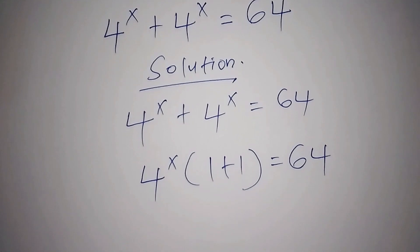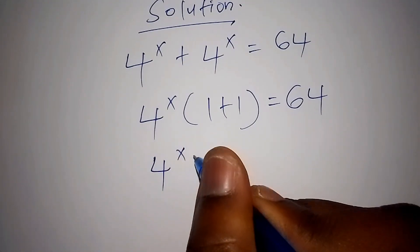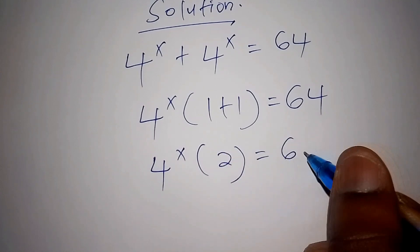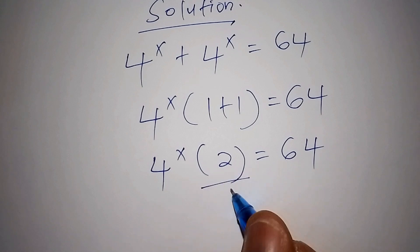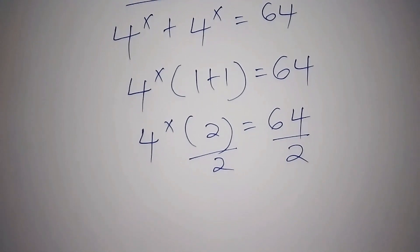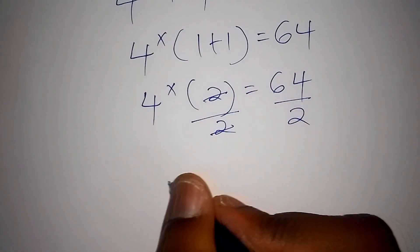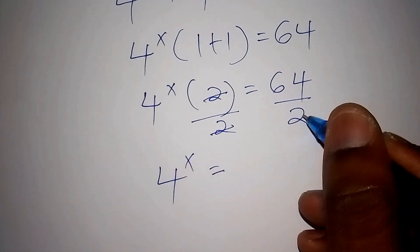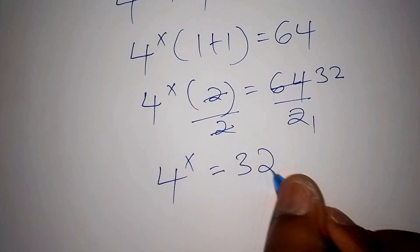Our next step: we have 4 to the power of x into bracket 1 plus 1, which is 2, is equals to 64. So we can divide both sides by 2. This one and this one cancel. So we shall have 4 to the power of x is equals to 64 divided by 2, which is 32. So 4 to the power of x is equals to 32.